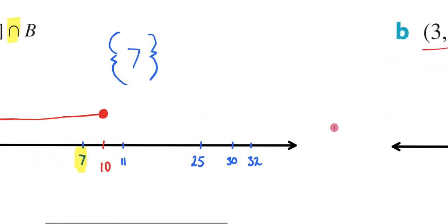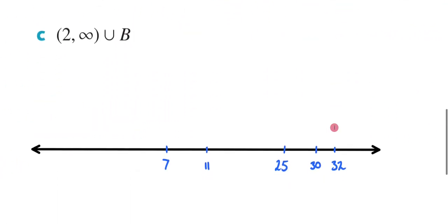Let's now move on to C. Now C is asking us to do something a little different. We don't have intersection anymore. Instead, we have the union. But before we worry about that, let's just write in my interval, which is 2 to infinity. And it's going to be an open circle here, because it's a round bracket, and include everything there. So it's all the way to infinity.